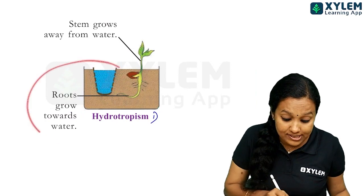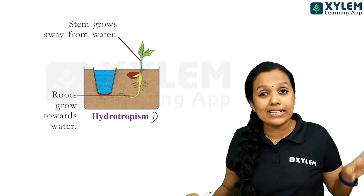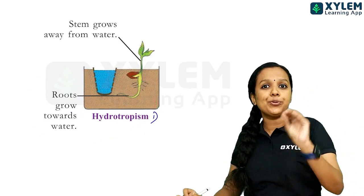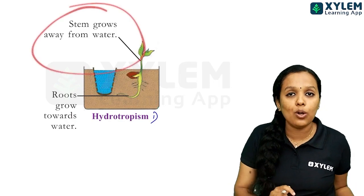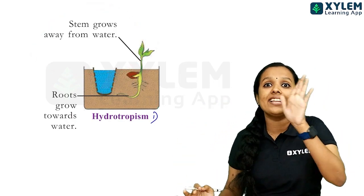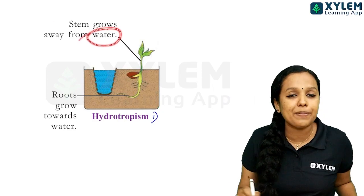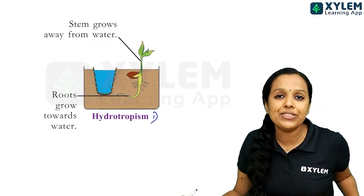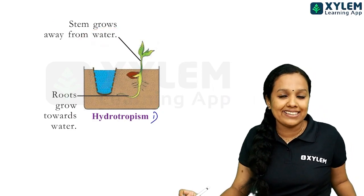It is on the roots — towards the water. The stem is away from the water, away from the streamline. That is hydrotropism — roots grow towards water and the stem grows away from water.